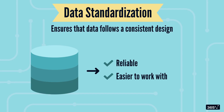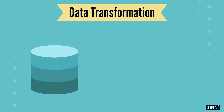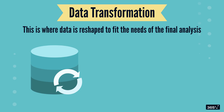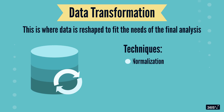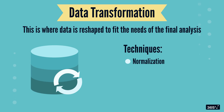Once the data is clean, we move on to transformation. This is where data is reshaped to fit the needs of the final analysis. There are several techniques for transformation, including normalization, which deals with adjusting values measured on different scales to a common scale. Aggregation,